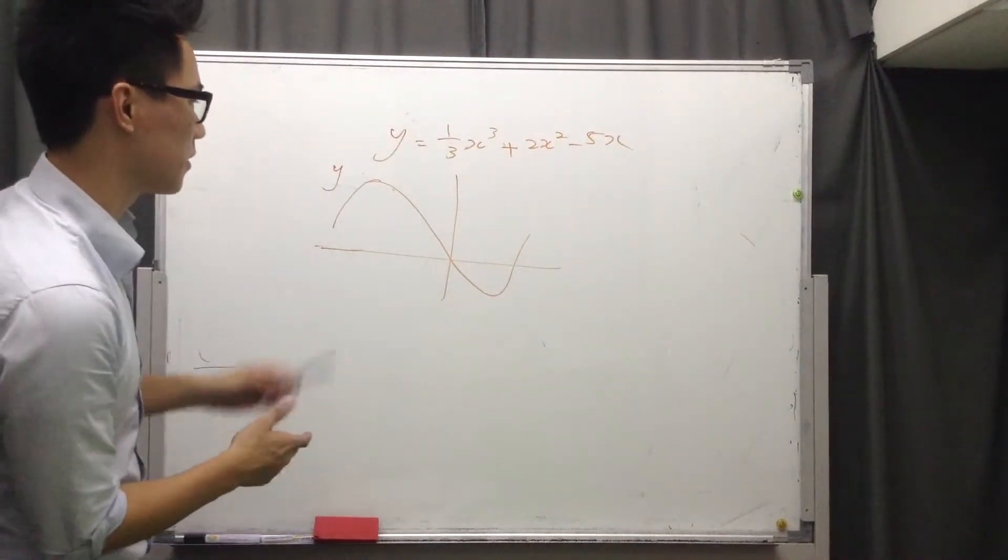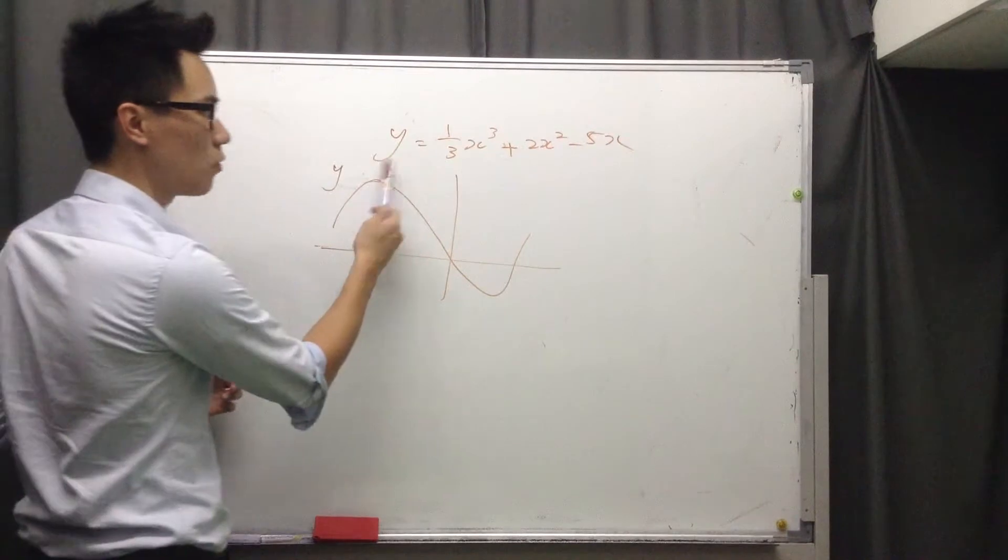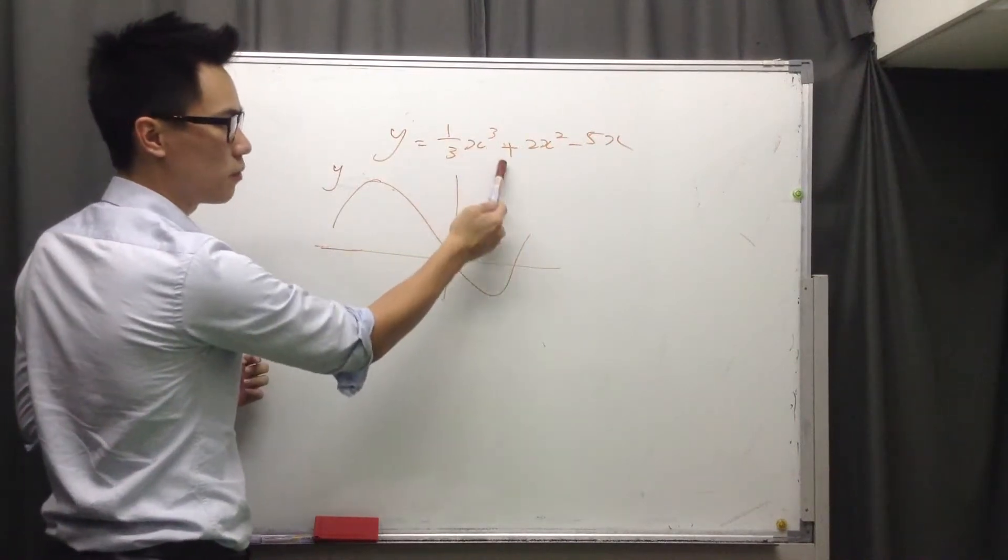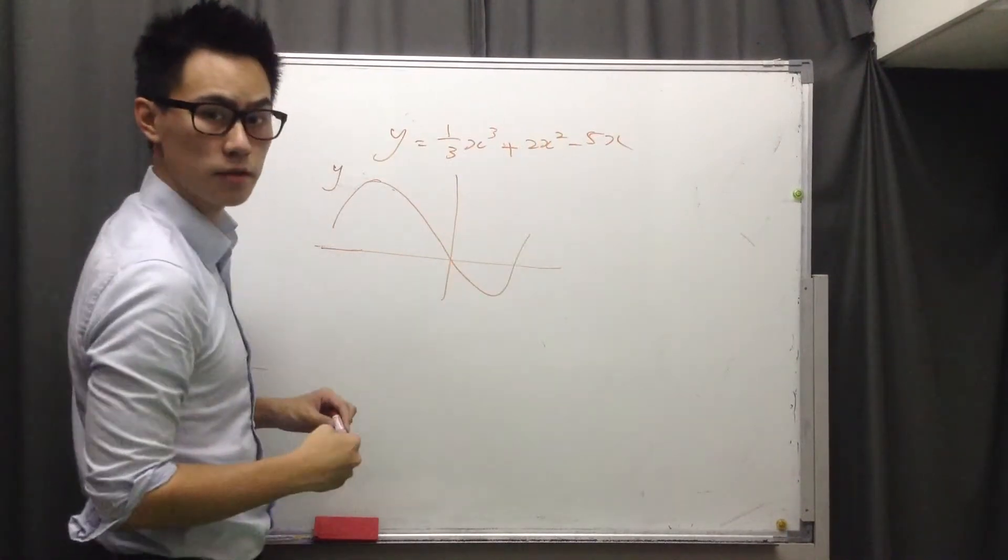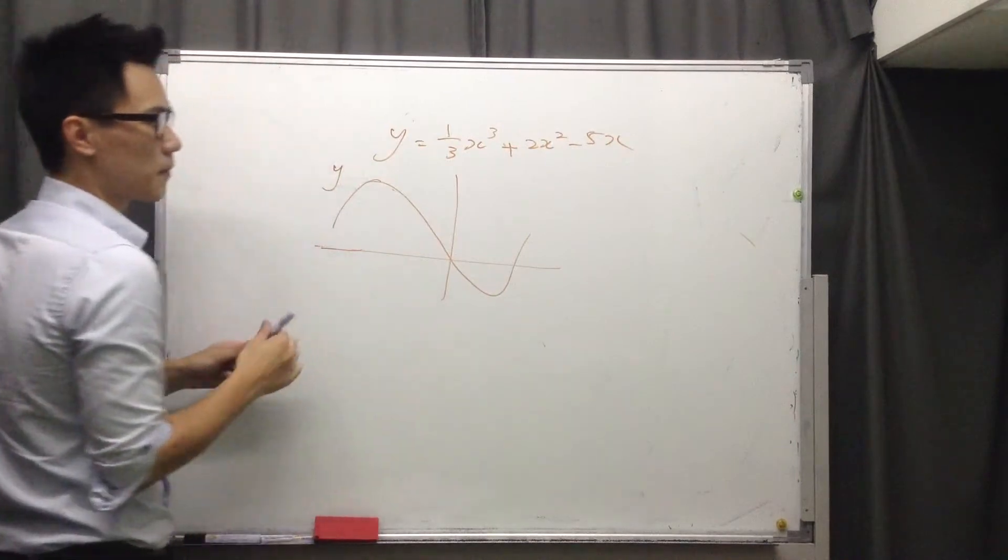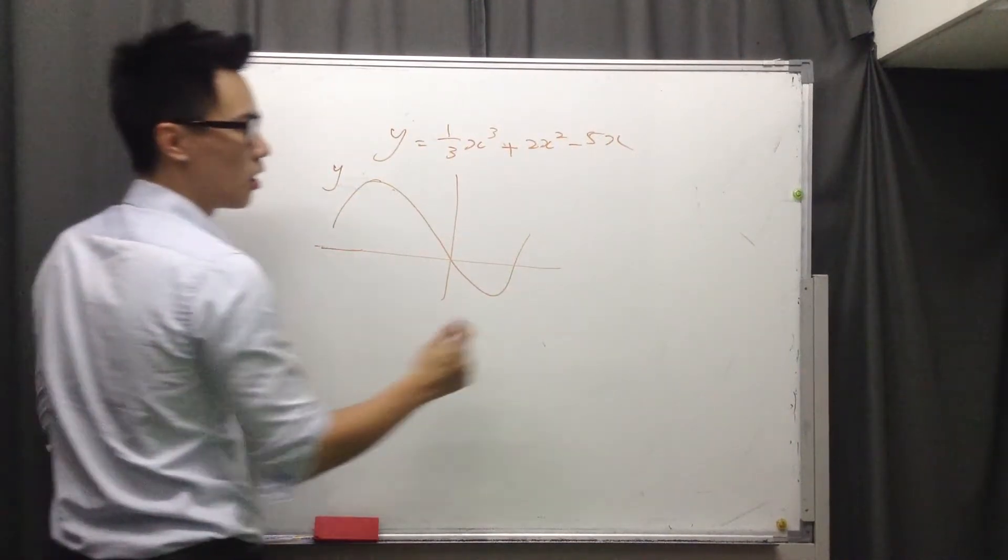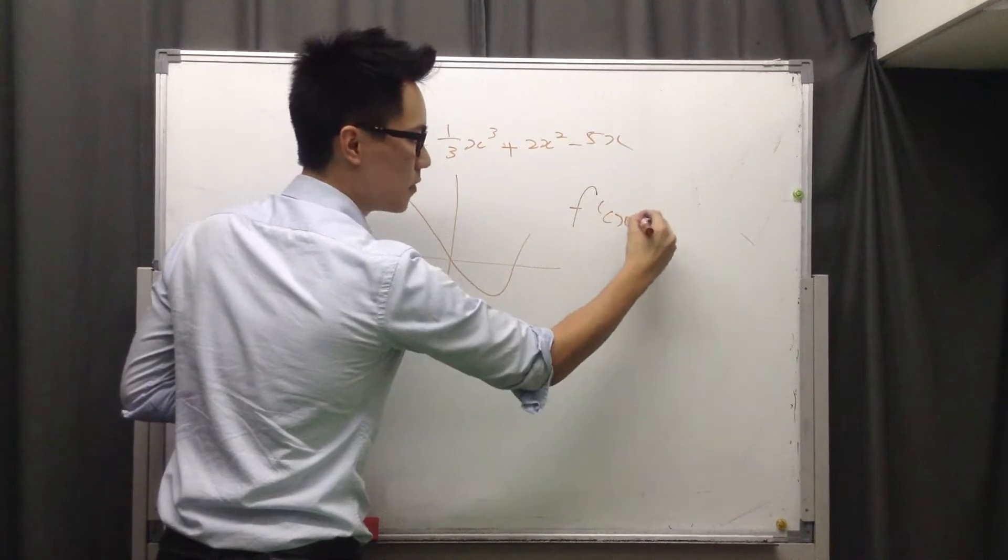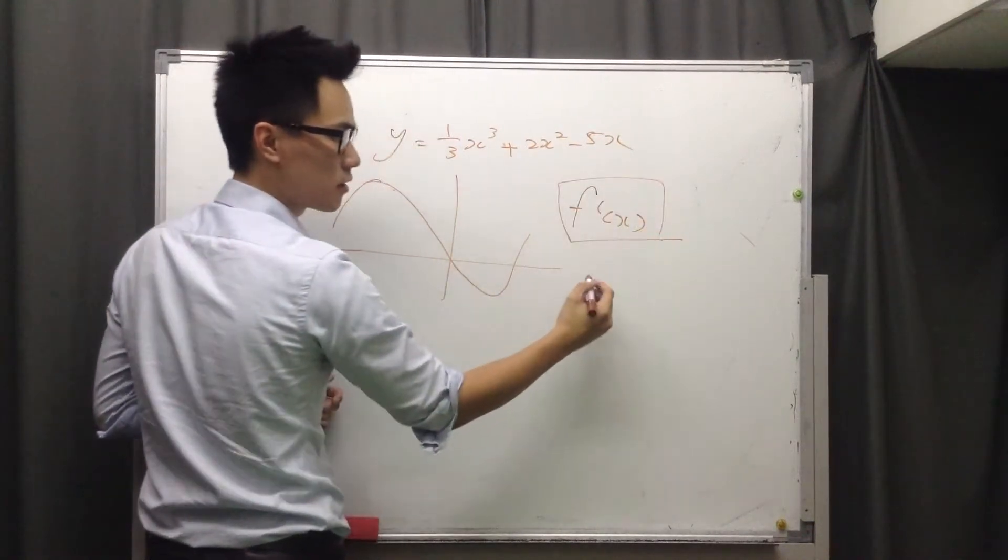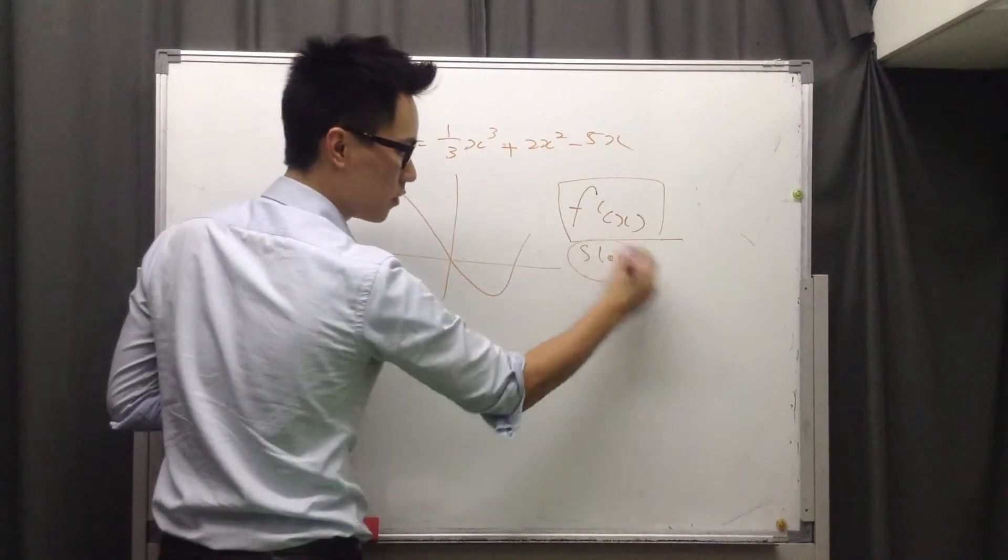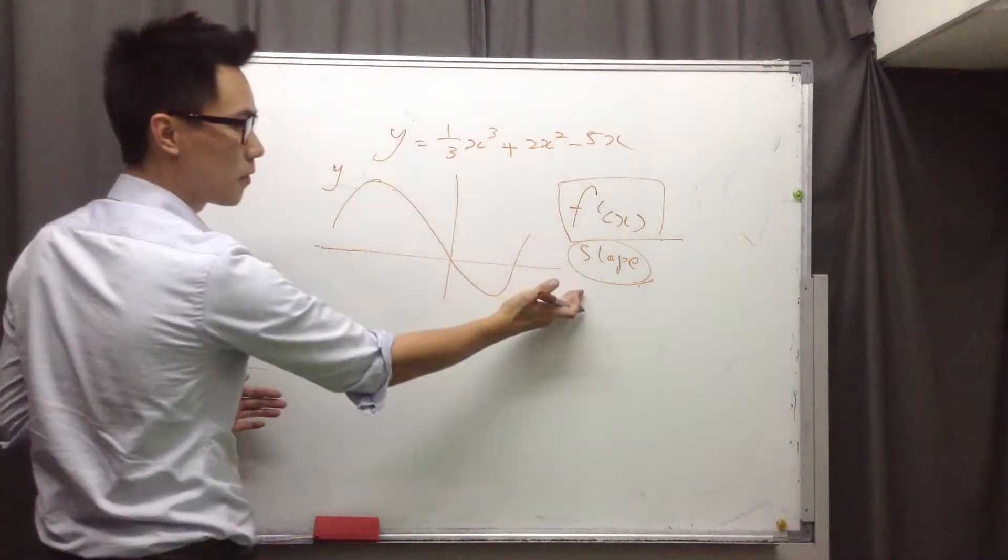You can see here there's a graph, and we have the equation y equals one-third x cubed plus 2x squared minus 5x. So how to find the slope? I think you all know what it means by first derivative, right? It means slope. Simply, it just means slope.